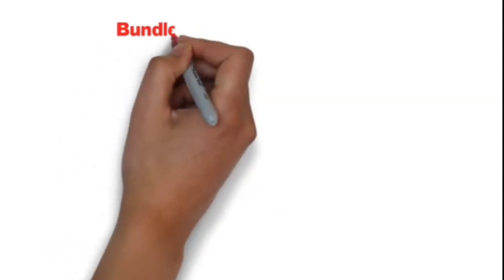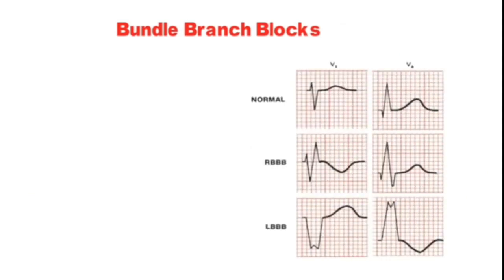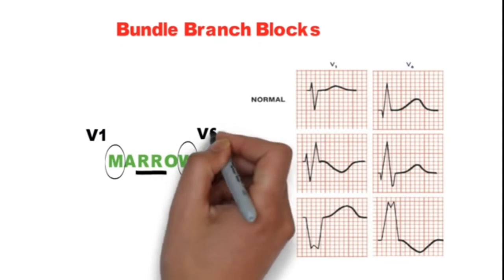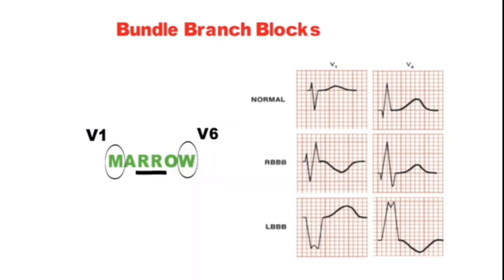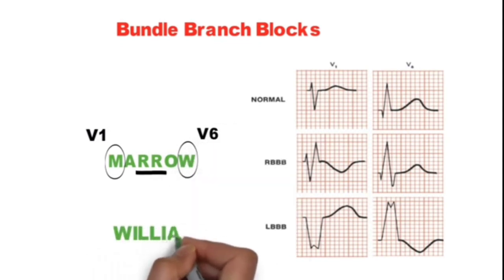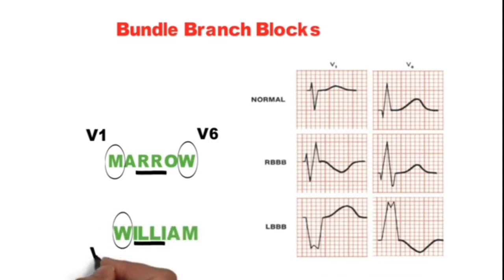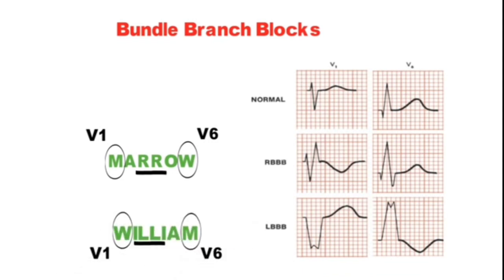In right bundle branch block there is M pattern in V1 and W pattern in V6, remembered by mnemonic 'MaRRoW'. Similarly in left bundle branch block, remembered by mnemonic 'WiLLiaM', with W pattern in V1 and M pattern in V6.